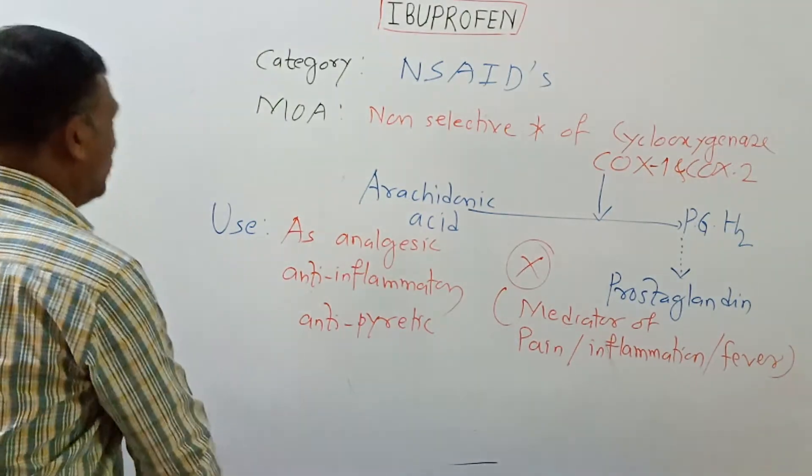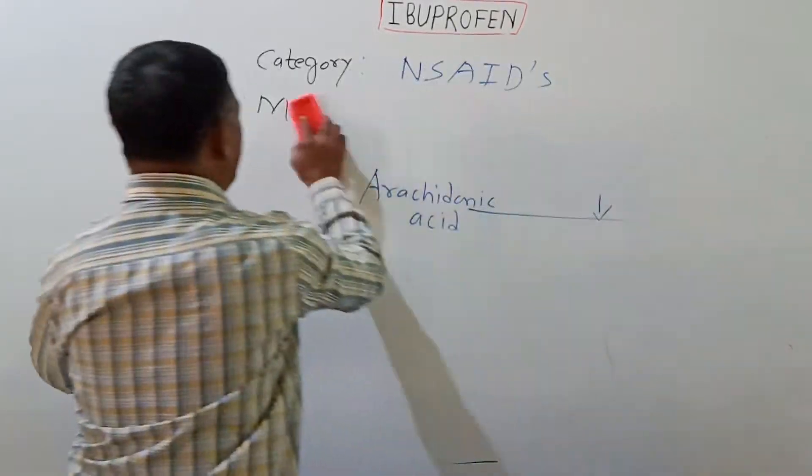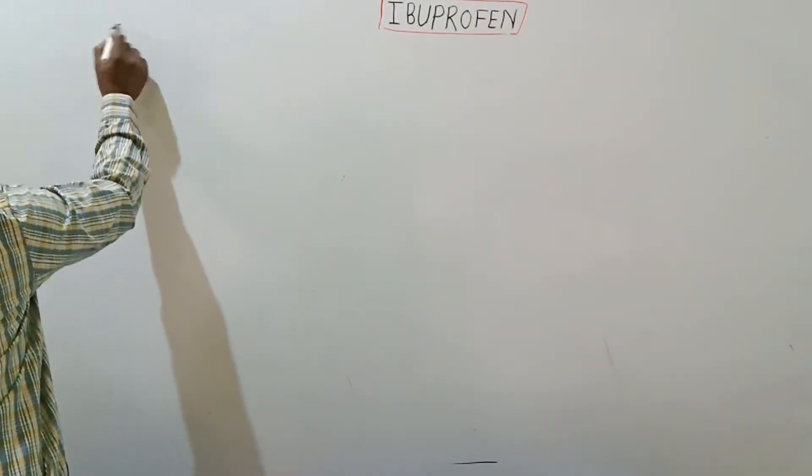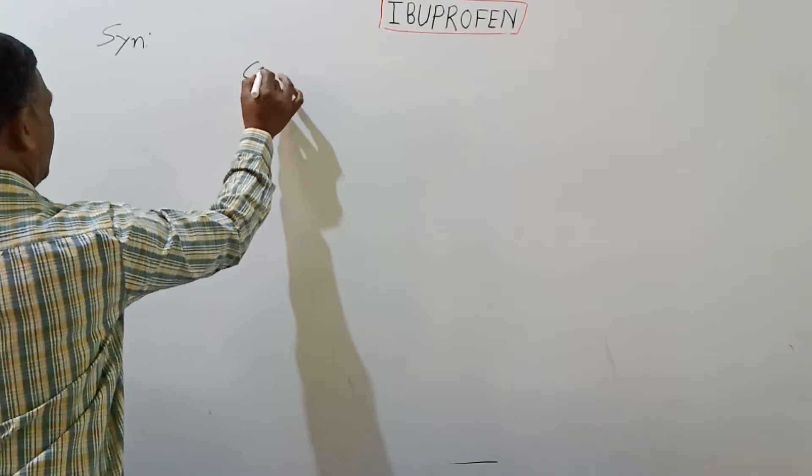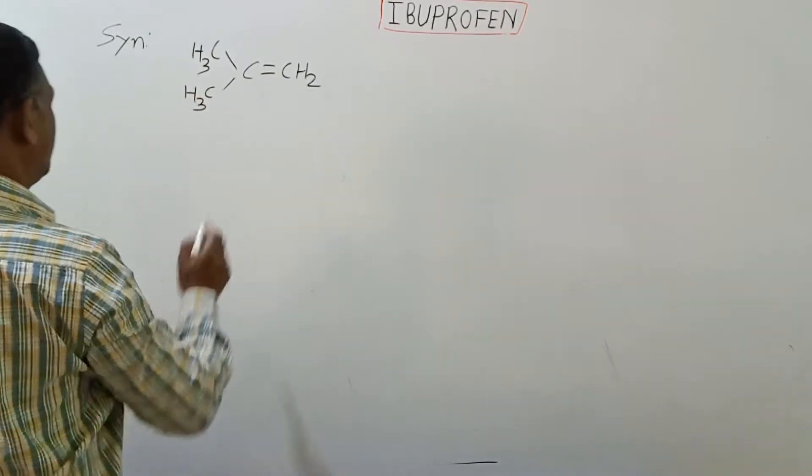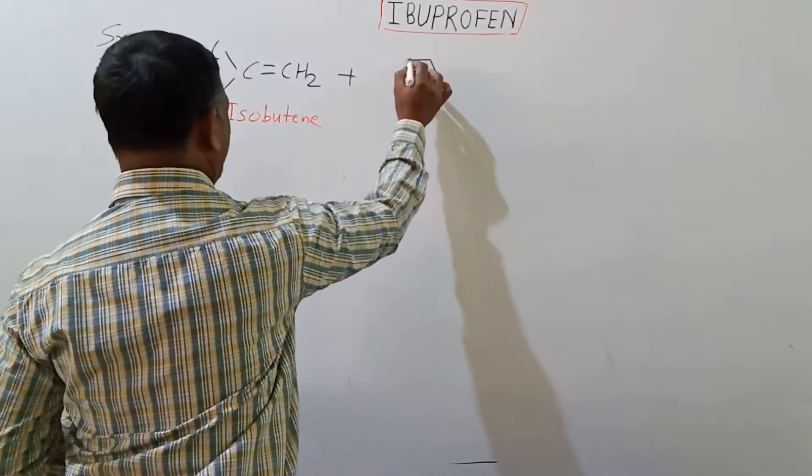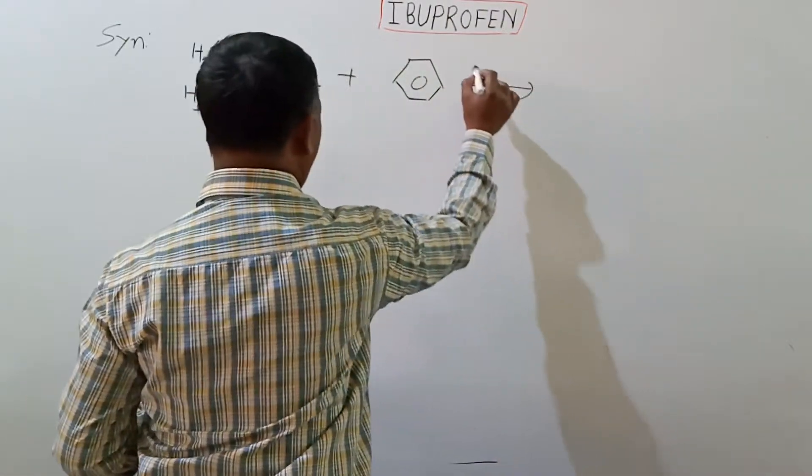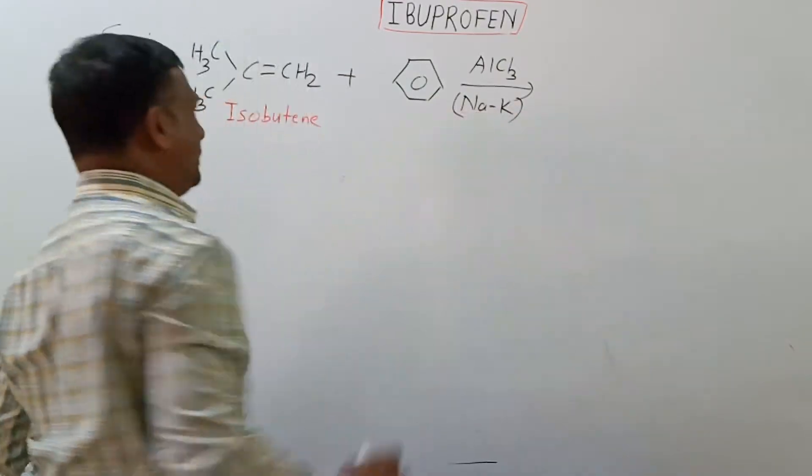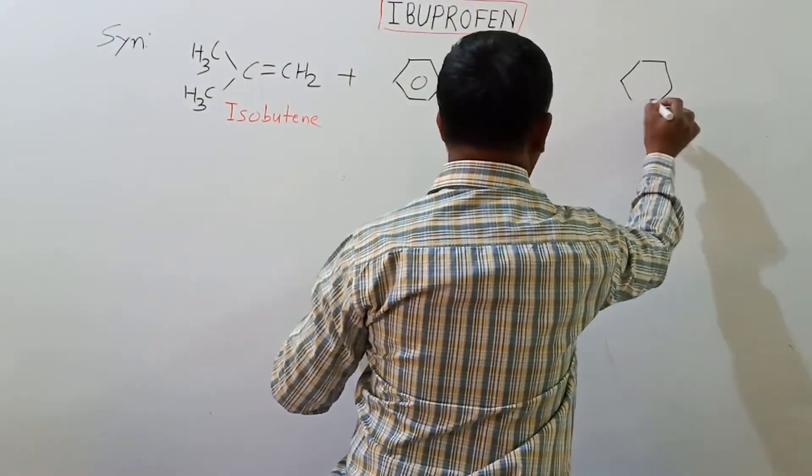Let's move on to synthesis of this compound. The synthesis of ibuprofen is very important one in view of the examinations. The synthesis of ibuprofen starts with isobutene, which is reacted with benzene in presence of aluminium chloride and a eutectic mixture of sodium and potassium. Here we get formation of isobutene.